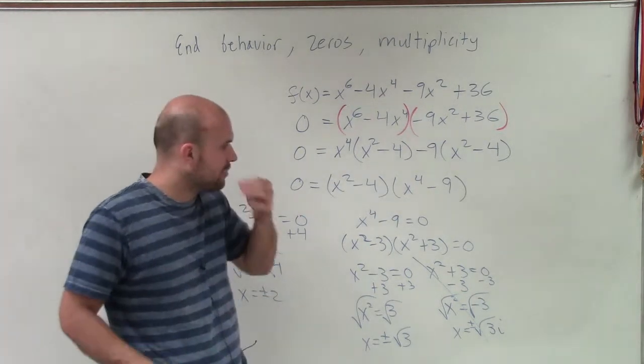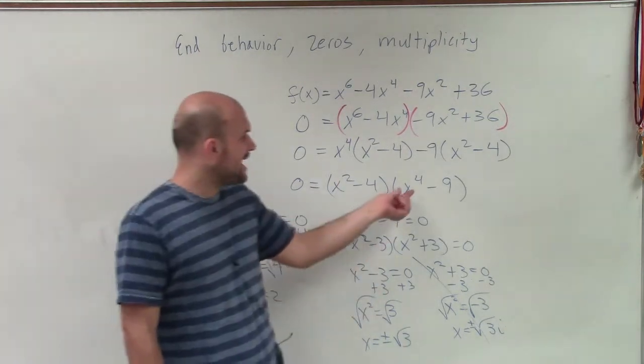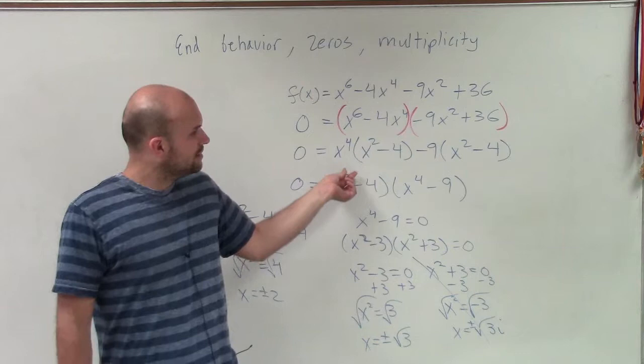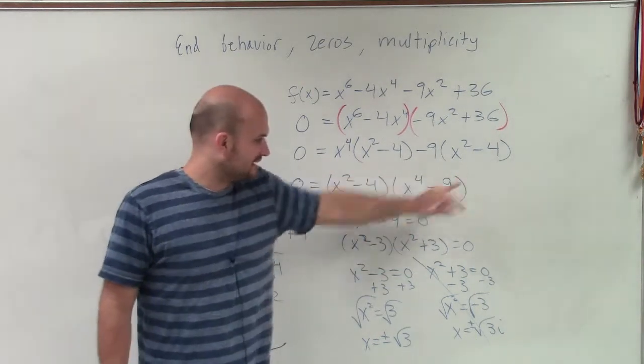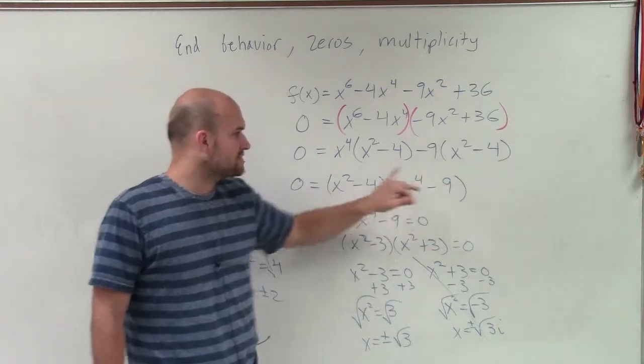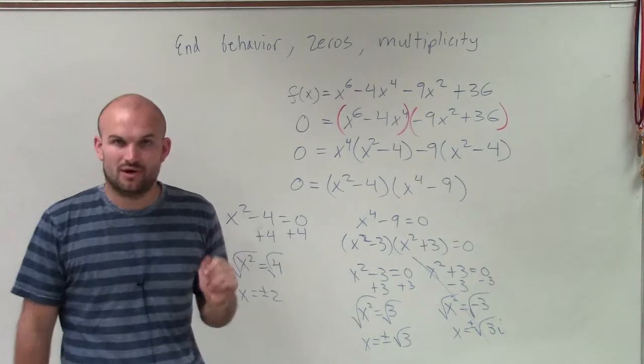We now go back over to our factors and determine what is the multiplicity. Remember, when looking at the multiplicity, we're not looking at the power inside the factor, but the powers outside the factors. And you can see that these powers are all powers of 1. So these are all zeros with a multiplicity of 1.